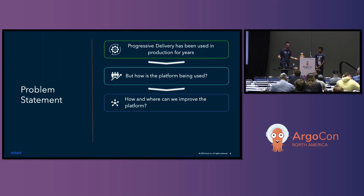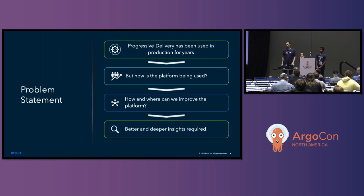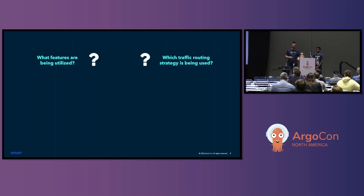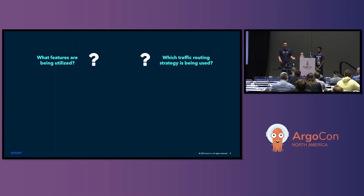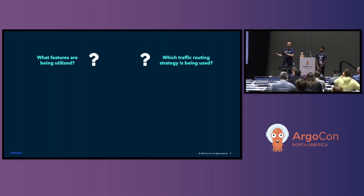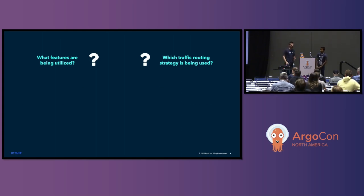What we realized was to do this, we need a lot more insight into what and how the product is being used. Some of the questions we're trying to answer: what features are actually being used? Yes, we know you use Argo Rollouts, but what are you really using in Argo Rollouts? It could be things like what traffic strategy you use — if you're using service mesh, that might have implications on our service mesh implementation and could open up some cool integrations.